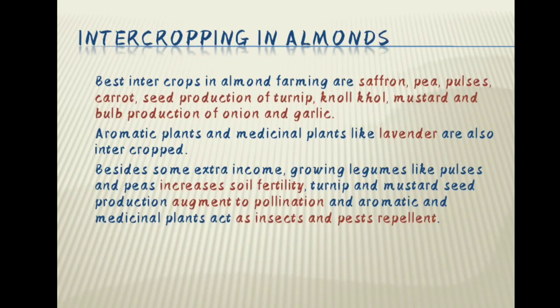Intercropping in almonds. Best intercrops in almond farming are saffron, corn, pea, pulses, carrot, seed production in turnip, nolkhol, mustard, and the bulb production of onion and garlic. Aromatic and medicinal plants like lavender are also intercropped. Besides providing some extra income, growing legumes like pulses and peas increases soil fertility. Turnip and mustard seed production augment pollination, and aromatic and medicinal plants act as insect and pest repellents.